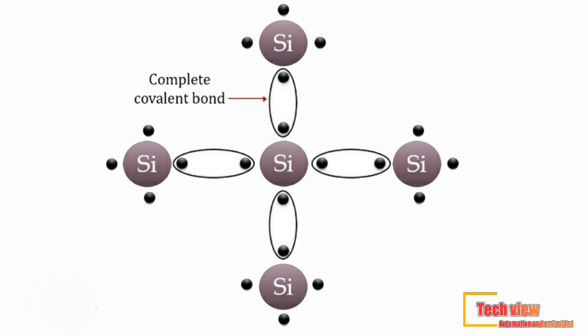A covalent bond consists of two electrons, one from each adjacent atom; both electrons are shared by the two atoms. At absolute zero, all these valence electrons are tightly bound to the parent atoms and no free electrons are available for electrical conduction. The semiconductor therefore behaves as a perfect insulator at absolute zero temperature.